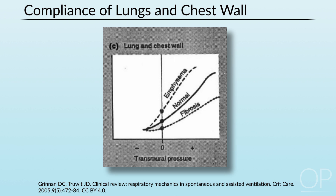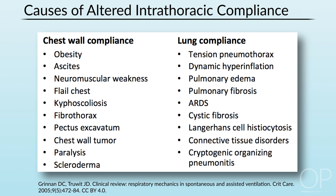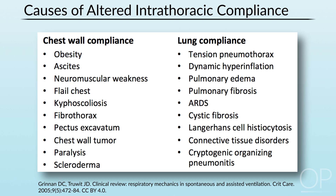This graphic represents two extremes: emphysema, pulmonary fibrosis, and a normal lung. In emphysema, expanding forces predominate and FRC is high. In fibrosis, FRC is low. Factors affecting chest wall compliance include obesity, edema, ascites, and neuromuscular weakness. Factors affecting lung compliance include pulmonary edema, ARDS, and many others.